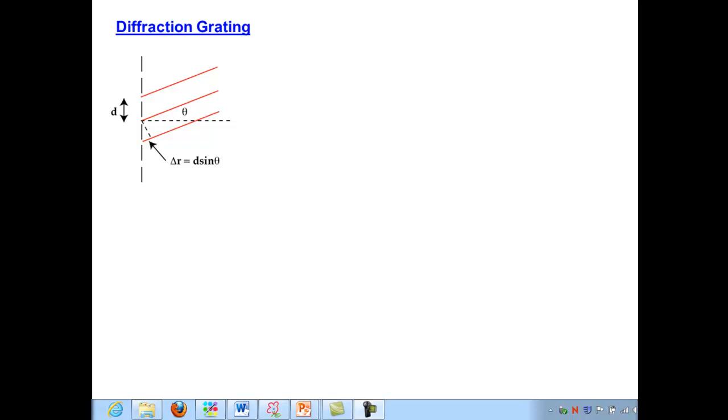We've already looked at one nice example of how all this wave properties of light can be put to use, and that was in understanding our ability to resolve two sources that are far away from us, to be able to see them as separate sources.